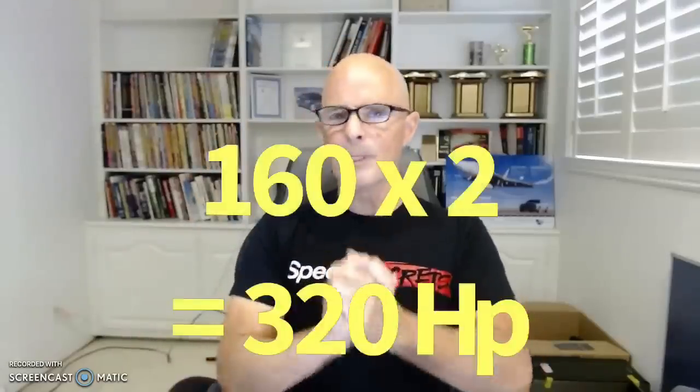One of the ways you can determine the power potential offered by a set of cylinder heads is to take a look at the peak airflow offered by the head. One of the general rules I like to use is if we take that peak flow and multiply it by two. So if our cylinder head flows say 160 CFM, like this factory Ford head, we know that it probably could support fairly easily 320 horsepower.